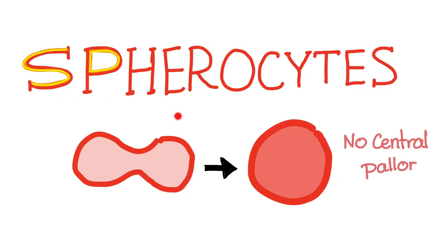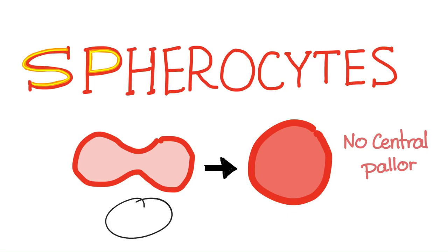Spherocyte literally means a circular cell. Normally, your red blood cell is a nice bi-concave disc, but the spherocyte is abnormal. It is a sphere, a circle, with no central pallor, because it's small and condensed. The normal red blood cell in cross-section has central pallor in the middle — the center is pale, just like a donut.